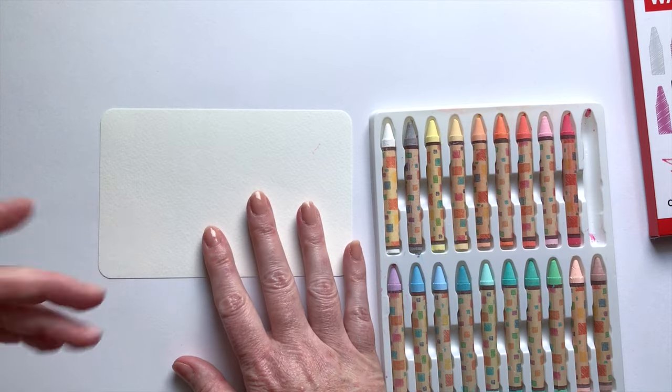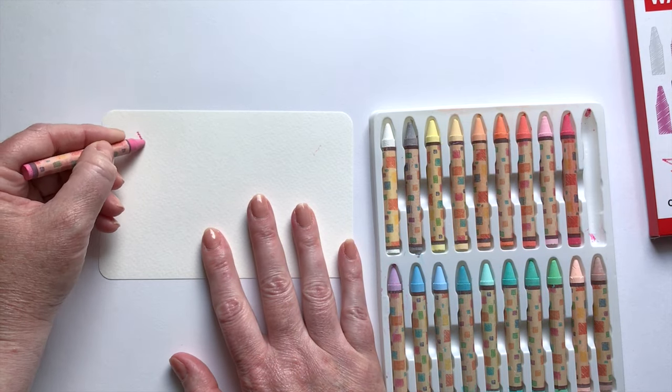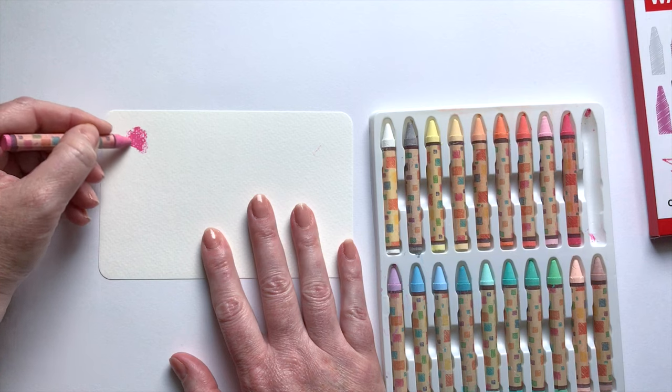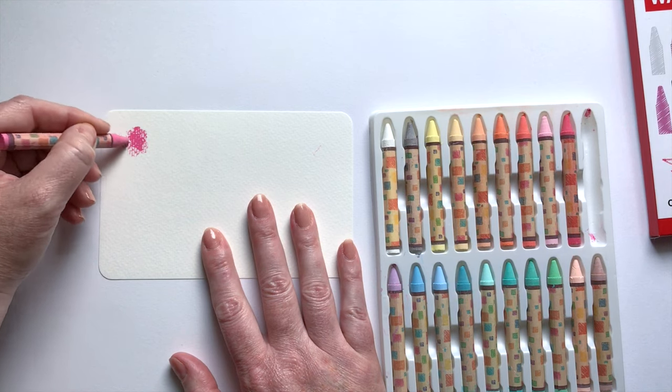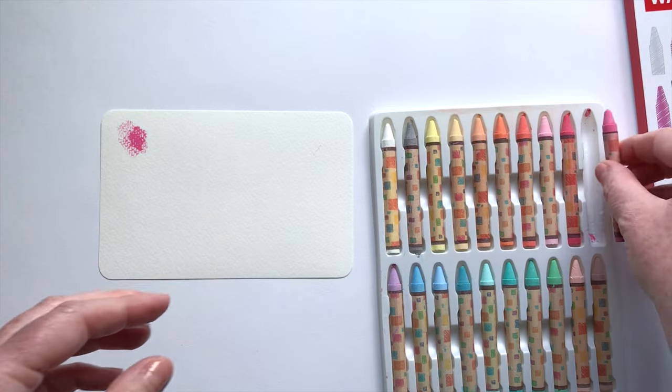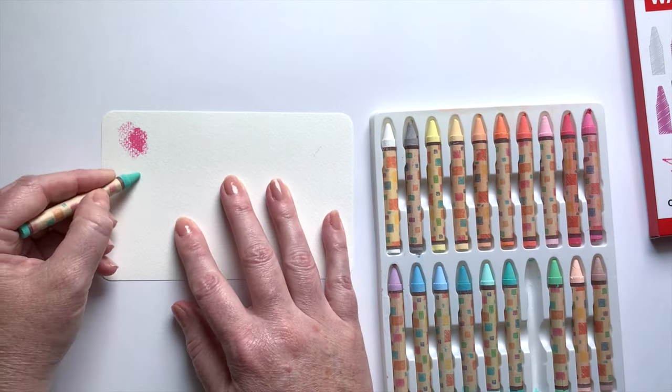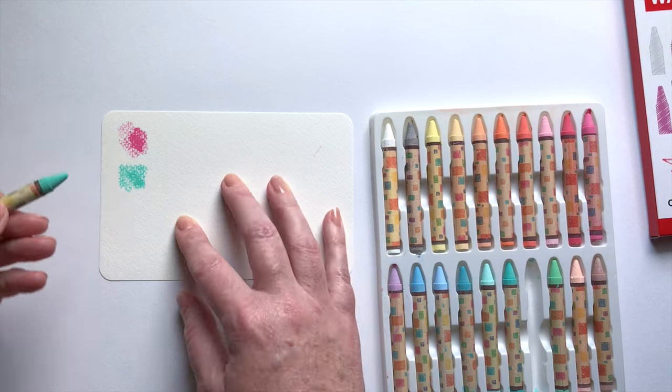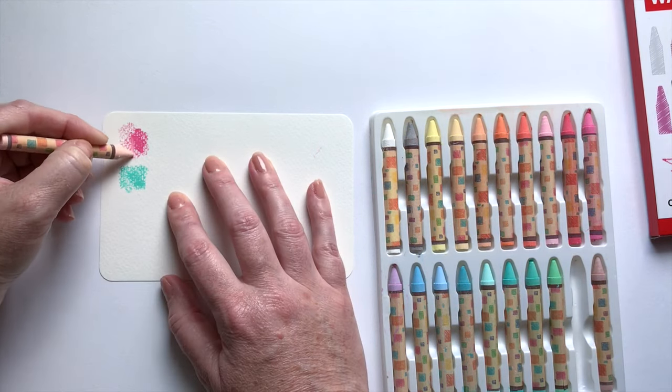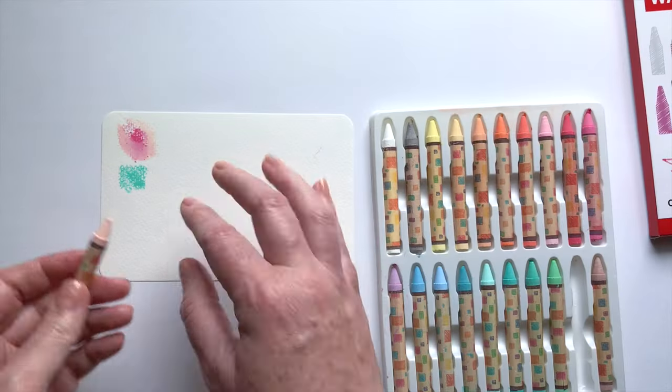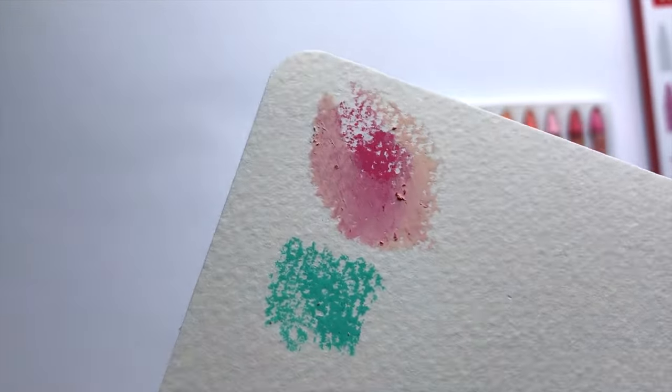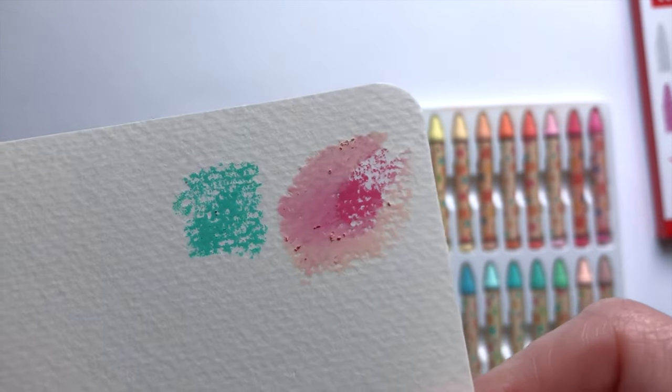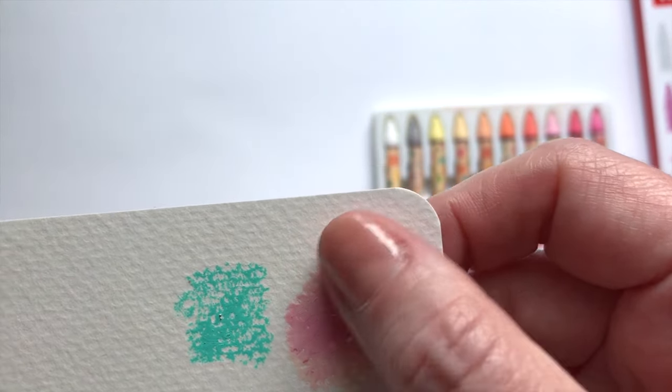Wax crayons, like, often are kind of hard. I want to see if these, ooh, these are buttery. Yeah, so you hardly even have to put any pressure on there and you get some color. Oh, that is nice. I like those. I thought they would be really lackluster, not much pigment, and go on really waxy, but they're super smooth.